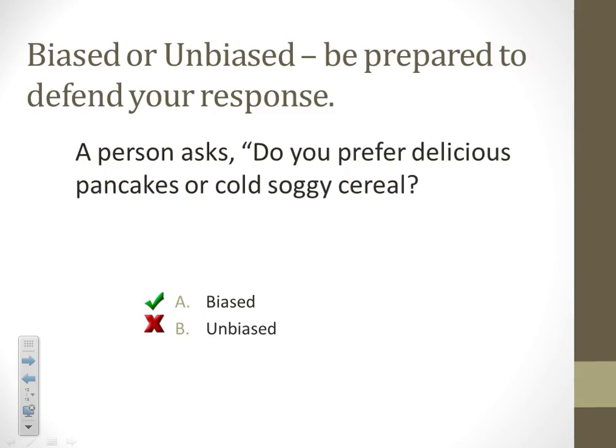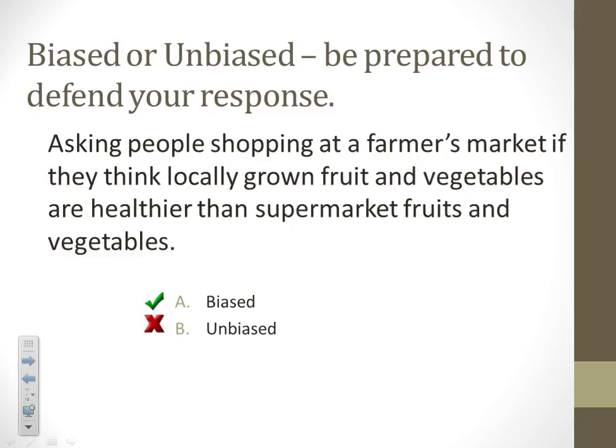This is pretty obvious, but tell me: is it question bias or sampling bias? A person asks, 'Do you prefer a delicious pancake or cold soggy cereal?' Question bias or sampling bias? The problem is with the question. If we took out those adjectives — 'delicious' and 'cold and soggy' — then the question is fine: 'Do you prefer pancakes or cereal?' Nothing wrong with that question, but when we put those adjectives in, it throws it off.